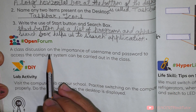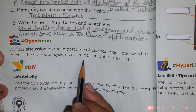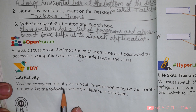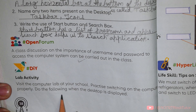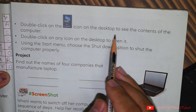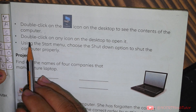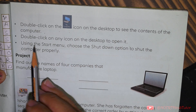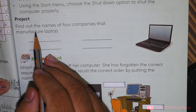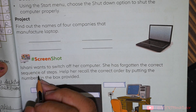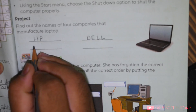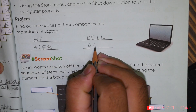Open forum: A class discussion on the importance of username and password to access the computer system can be carried out in class. DIY Lab activity: Visit the computer lab at your school. Practice switching on the computer properly. Double click on the My Computer icon to see the contents of the computer. Double click on any icon to open it. Using the start menu, choose the shutdown option to shut down the computer properly. Project: Find out the names of 4 companies that manufacture laptops — HP, Dell, Acer, Asus.